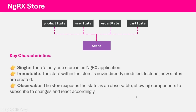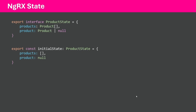Here we have an example of how a state will look. We are creating a product state, calling it as initial state, and specifying a type — the ProductState interface — which defines what properties we want in this state. Based on that, we create the properties and assign initial values. Here we have two properties, products and product, initialized with some initial values. To access properties from this state, it should be added to the store, which we will see how to do in our next lecture.